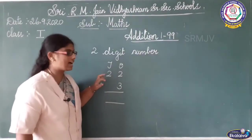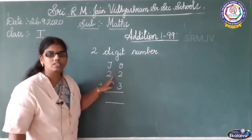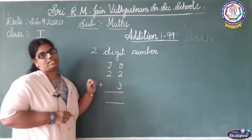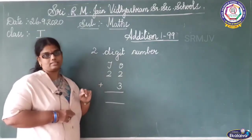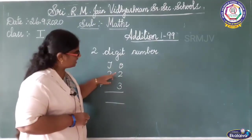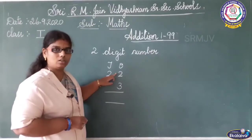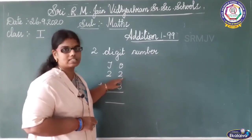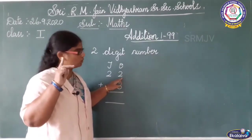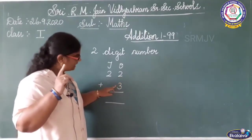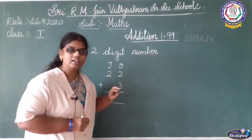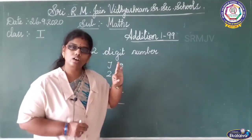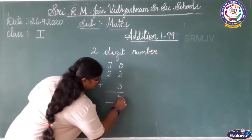While adding, you must add one's place first, then only you must add ten's place. Is it clear, children? See here — the number here is two, then three. You must keep the upper number two in the mind, three in the finger. Two after: three, four, five. So what is the answer? Five. I am writing here five.